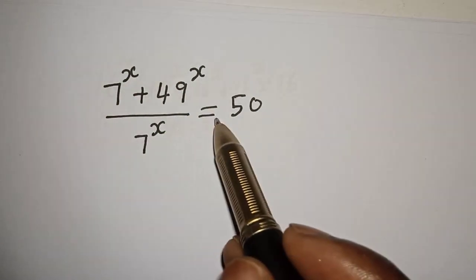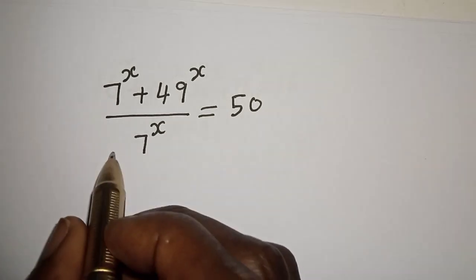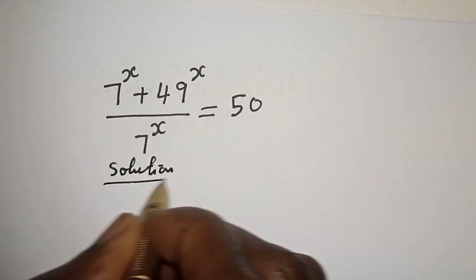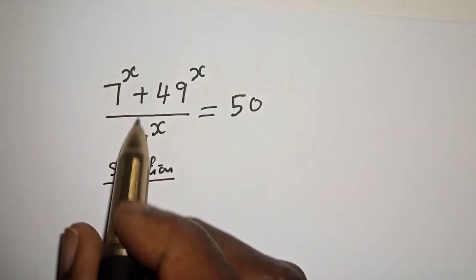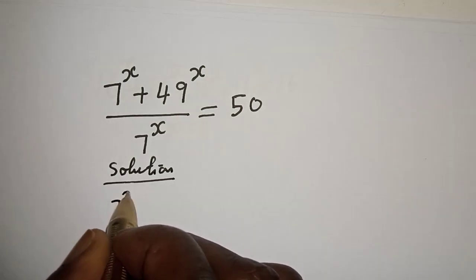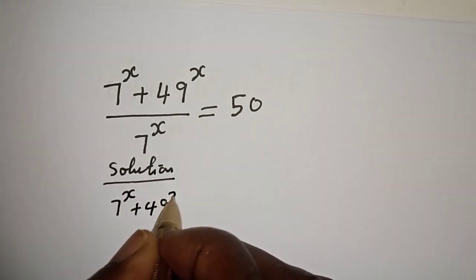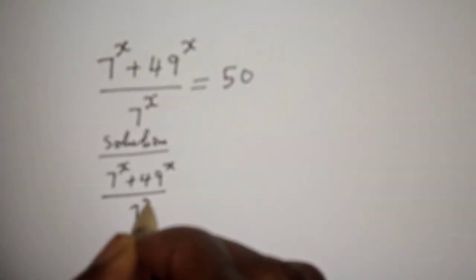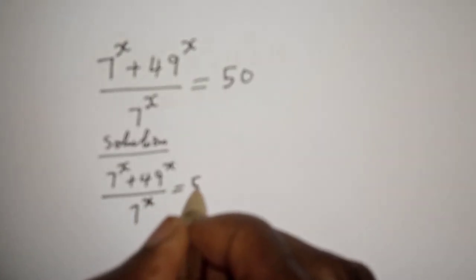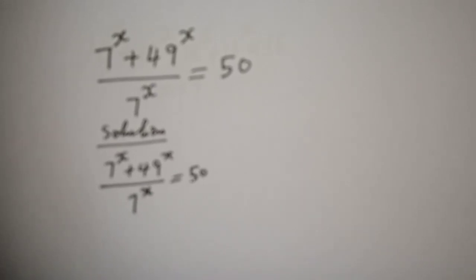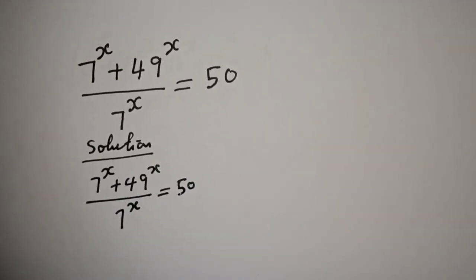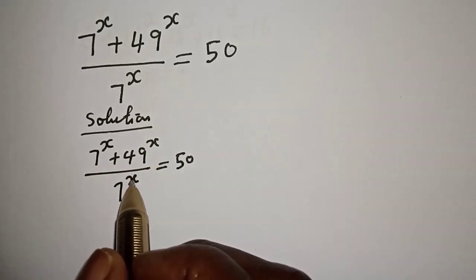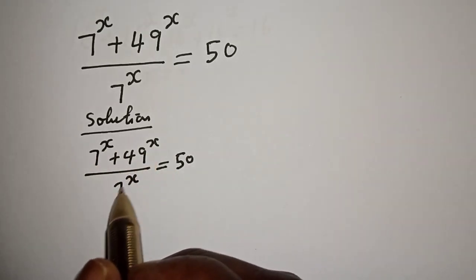But before we proceed, please don't forget to like, share, comment and subscribe. We have the given equation: 7 raised to power s plus 49 raised to power s, divided by 7 raised to power s, is equal to 50.